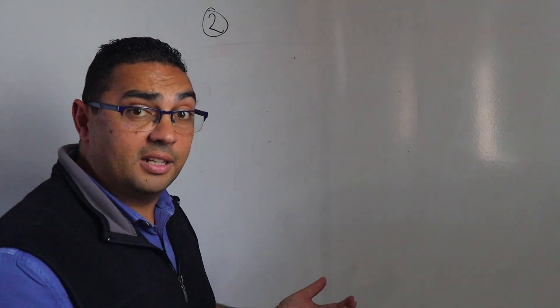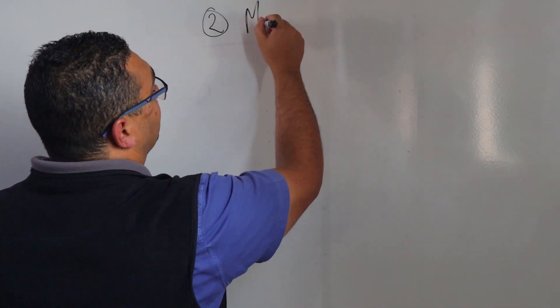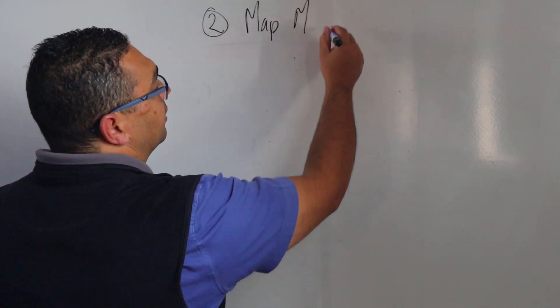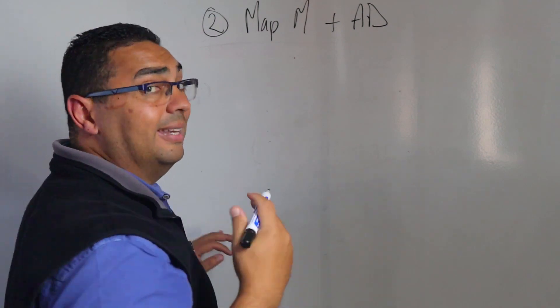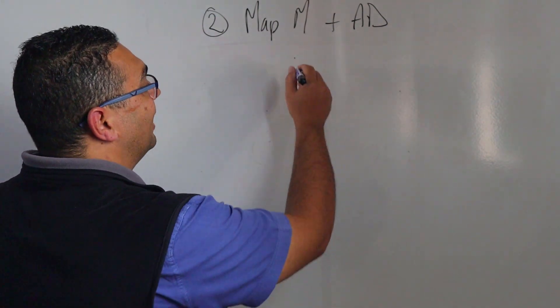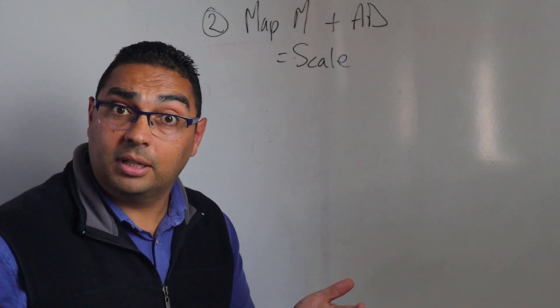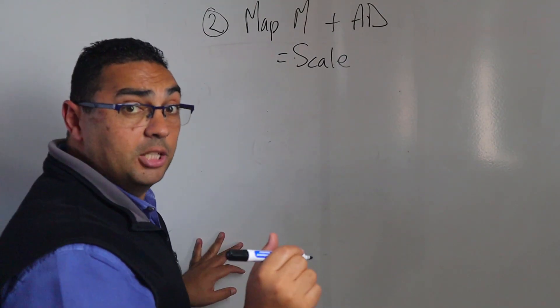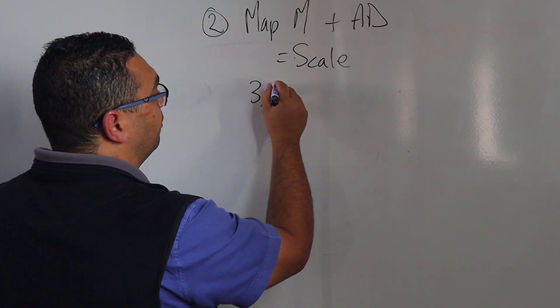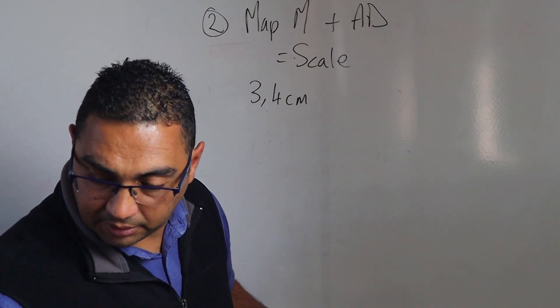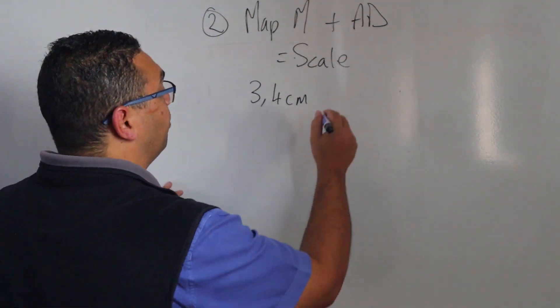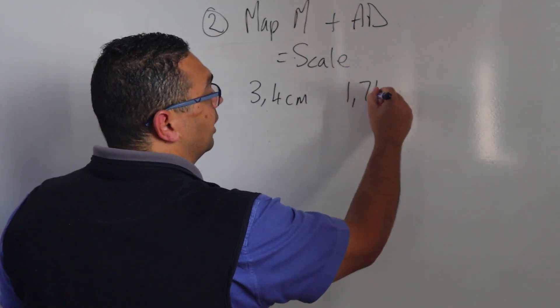Now can you guess what my last example is going to be? Well I've now got my map measurement and I have my actual distance, and now what do I want? I want my scale. So let's look at an example. My map measurement is 3.4 centimeters. My actual distance is 1.7 kilometers.